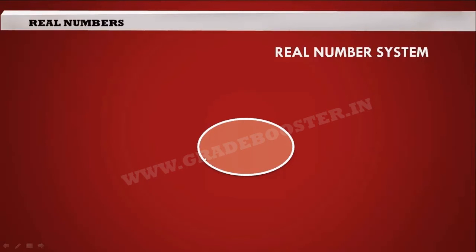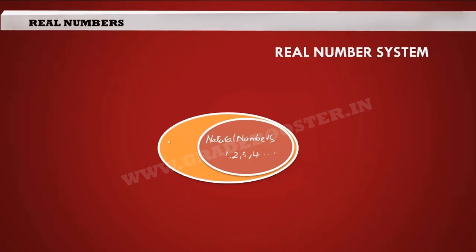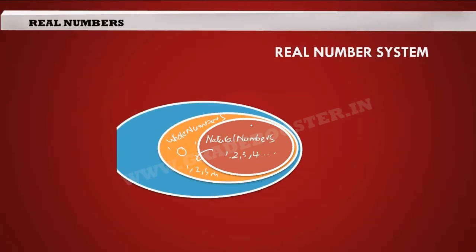Let us begin with the simplest set of numbers called natural numbers. These are the general counting numbers beginning with 1, 2, 3, 4 and so on. Natural numbers are a subset of another set called whole numbers, which includes all the natural numbers along with 0. Whole numbers are a subset of another set called integers, which consist of negative numbers, 0, and positive numbers.